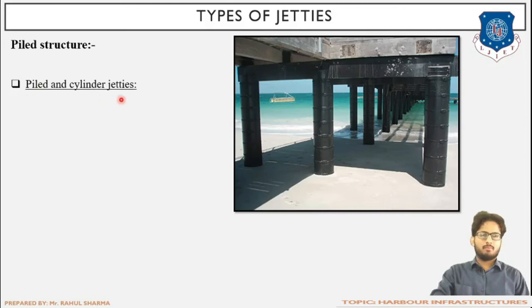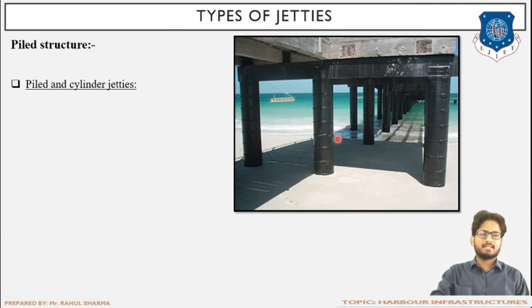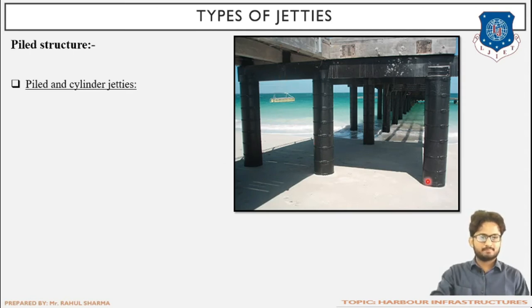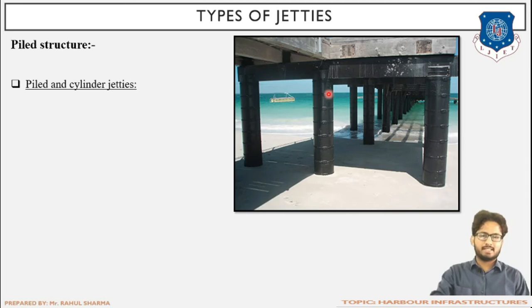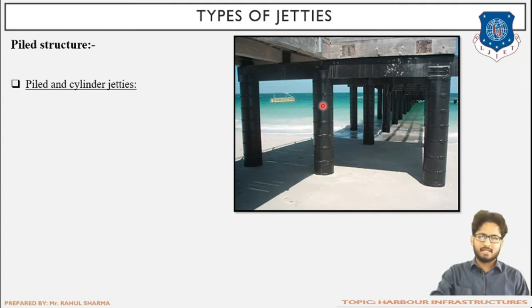In pile and cylinder jetties, casing of piles is done. A cylindrical concrete structure covers the pile to prevent deterioration, increase durability, and reduce maintenance. This casing protects the jetty from deteriorating, increases its durability, decreases maintenance, and ensures that for a long period the strength of the jetty remains as it is.